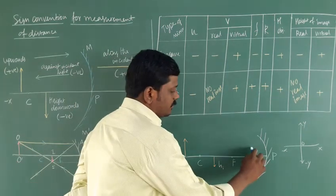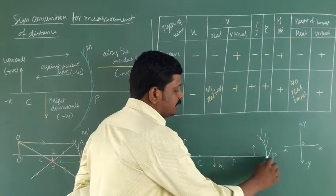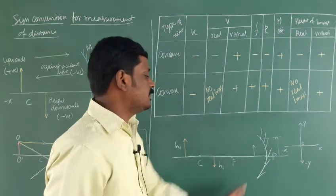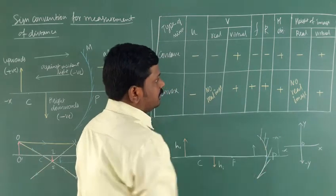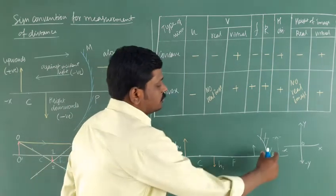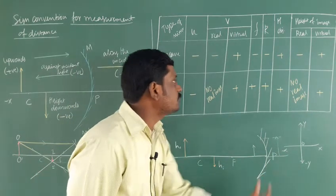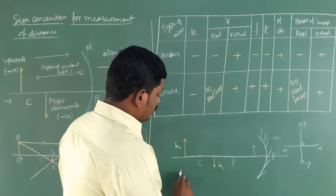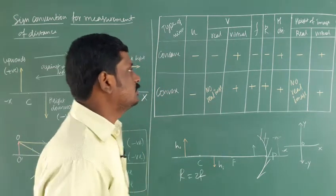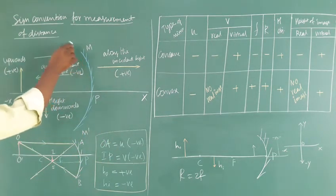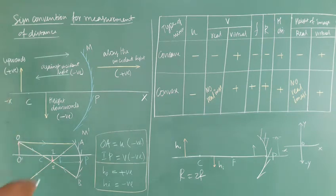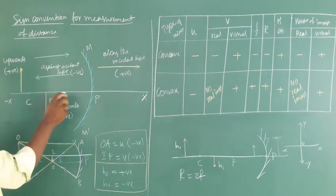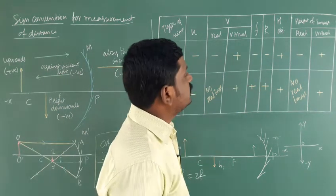When the object is placed between the pole and the principal focus, the image is formed behind the mirror — on the positive x axis — so we get a virtual image. That image distance v is positive, as it is along the direction of light. The focal length of a concave mirror is negative, so r is also negative, since r equals 2f. The radius of curvature is the distance from the pole to the center of curvature.